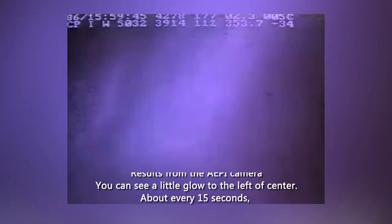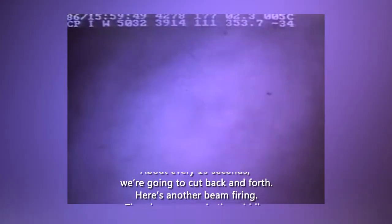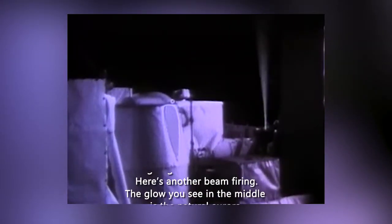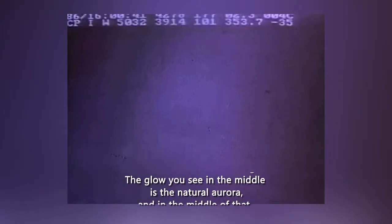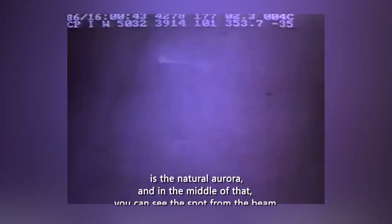Results from the API camera. You can see a little glow to the left of center about every 15 seconds. We're going to cut back and forth. Here's another beam firing. The glow you see in the middle is the natural aurora, and in the middle of that you can see the spot from the beam.